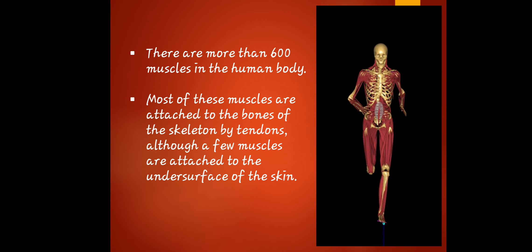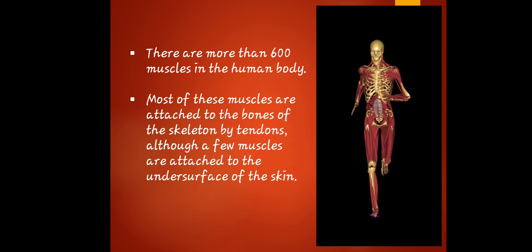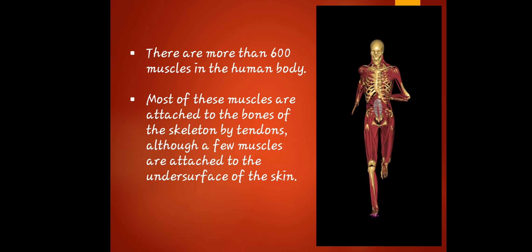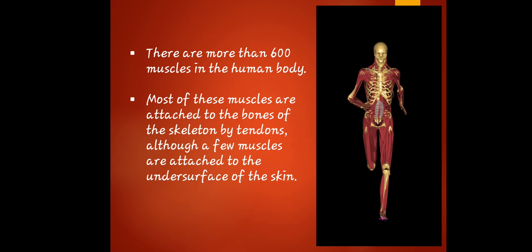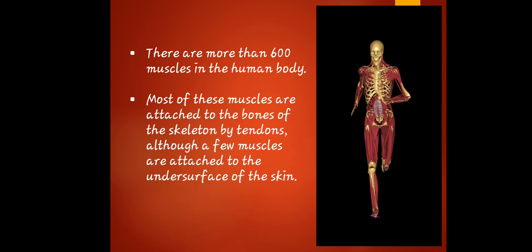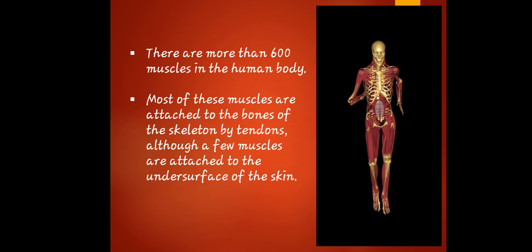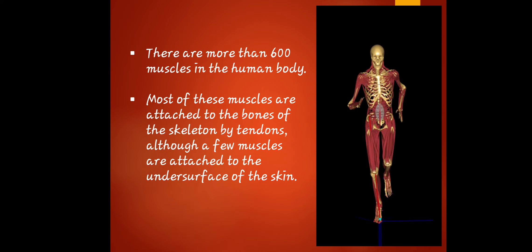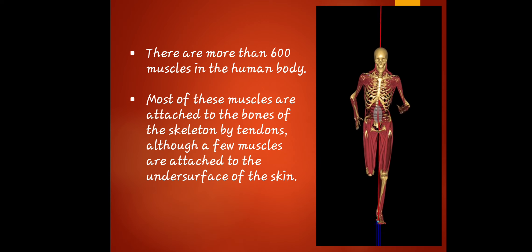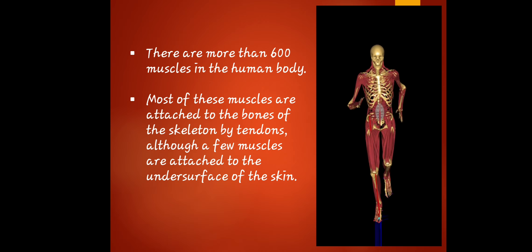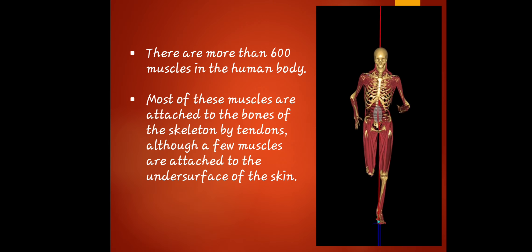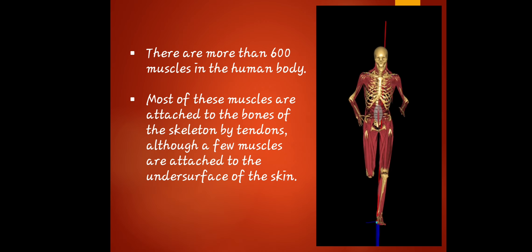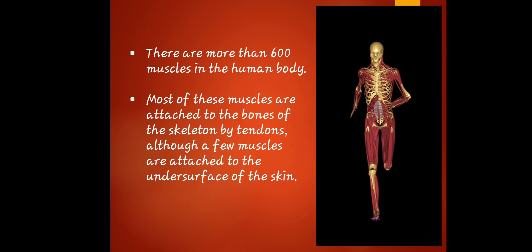There are more than 600 muscles in the human body. Most of these muscles are attached to the bones of the skeleton by tendons, although a few muscles are attached to the underside of our skin. As I mentioned, the muscular system is connected to the skeletal system because muscles are attached to bones by tendons, which allows us to freely move and run.